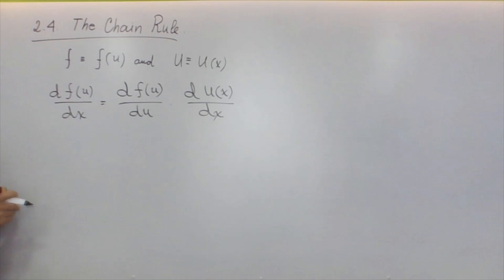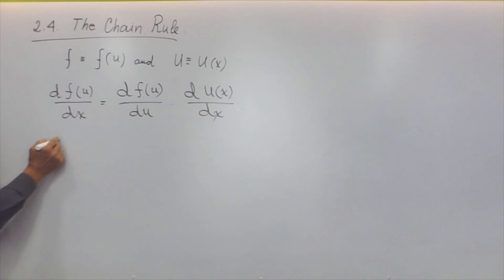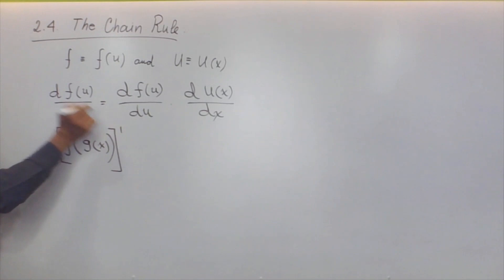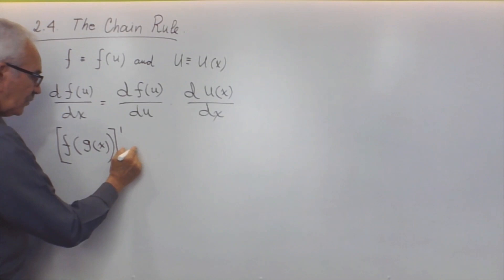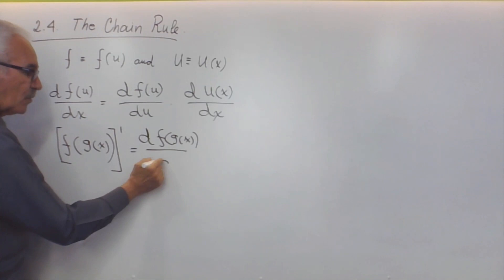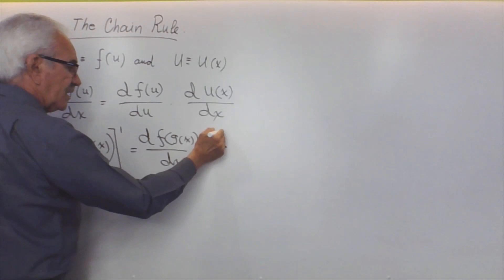The more advanced definition uses the composite function notation. If we have a function f(g(x)), then the derivative can be written using the prime symbol as: the derivative of f evaluated at g(x), with respect to x, times the derivative of g with respect to x.